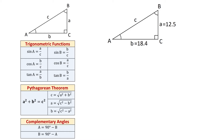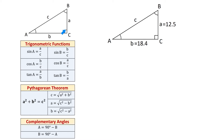Sine of angle A is the opposite side A divided by hypotenuse C. Cosine of angle A is the adjacent side B divided by hypotenuse C. And tangent of angle A is the opposite side A divided by the adjacent side B.